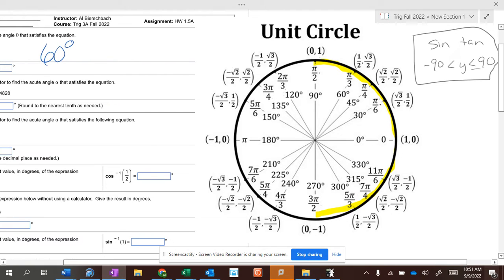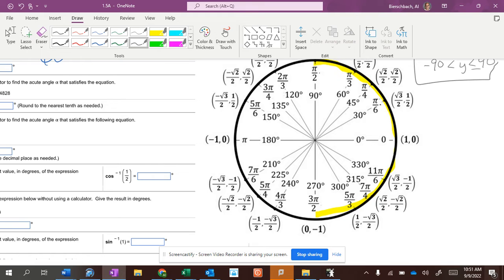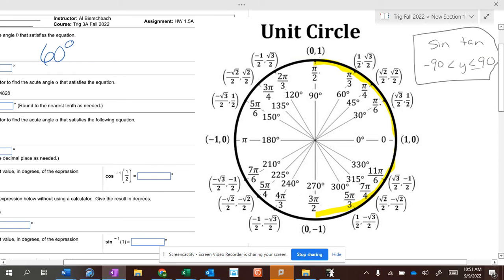When we're dealing with cosine, where is the cosine of 1 half at? Where's the cosine of 1 half at? 60 degrees. Where else on the unit circle is it? Negative 60 degrees or at 300 degrees, right?